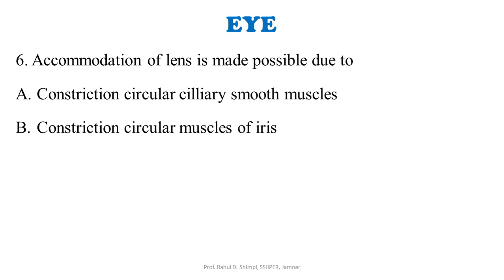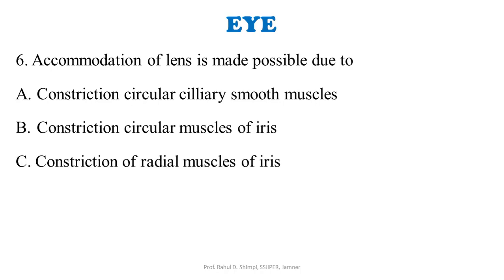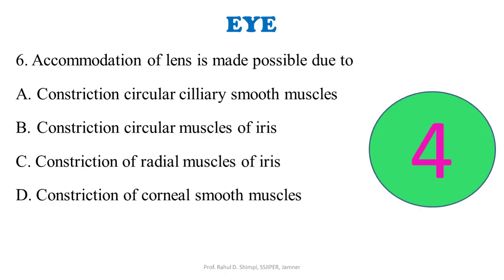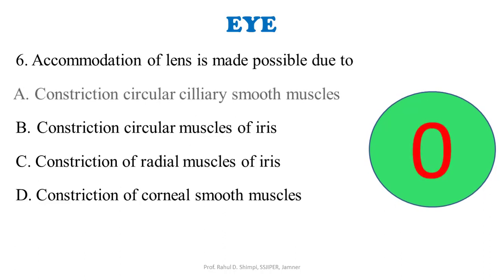Accommodation of the lens is made possible due to: A: constriction of circular ciliary smooth muscles. B: constriction of circular muscles of iris. C: constriction of radial muscles of iris. D: constriction of corneal smooth muscles. The correct answer is option A — constriction of circular ciliary smooth muscles.